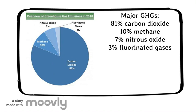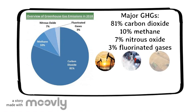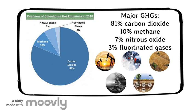Most of the greenhouse gases are from human activities, such as burning fossil fuels, driving cars, and agriculture activities, and so on. A small amount of these gases is emitted from natural sources like volcano eruptions and decay of organic matter.